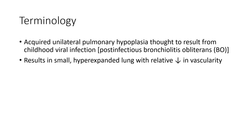It is acquired unilateral pulmonary hypoplasia, thought to result from childhood viral infection. Post-infectious bronchiolitis obliterans results in a small hyper-expanded lung with relative decrease in vascularity.